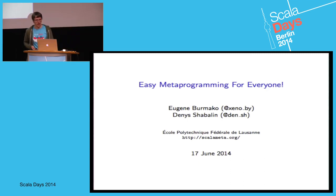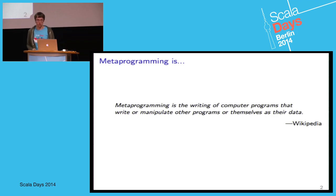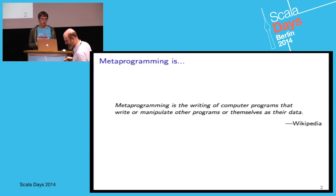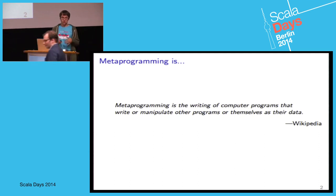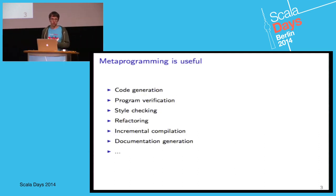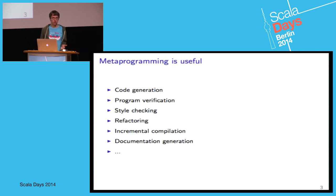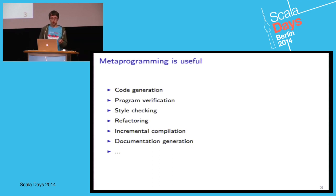Let's see what we've done. So, metaprogramming — what's metaprogramming? If you ask Wikipedia, it says that metaprogramming is about writing programs that manipulate other programs in any ways: generate them, analyze them, do other fancy stuff. Since it's such a broad topic, it's actually applicable to a lot of things that you might not even realize are metaprogramming. So code generation is kind of natural, but there's also program verification, refactoring — even SBT is essentially doing metaprogramming. That's kind of cool and it shows that this domain is important for things we do every day.